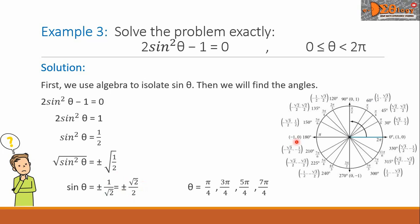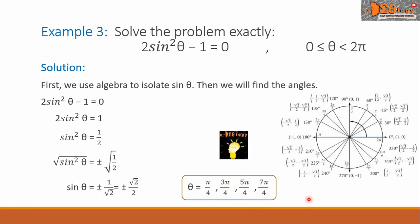Considering the unit circle, we will find that θ equals these four values. We have π/4, 3π/4, 5π/4, and 7π/4. These are the final answers.